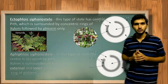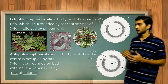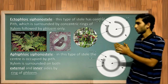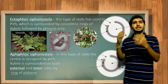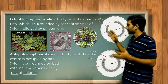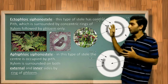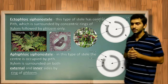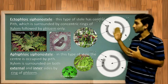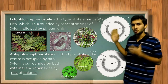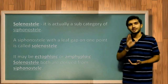In amphiphloic siphonostele, the central region is occupied by pith, and the xylem is covered on both the outer and inner sides by rings of phloem. Examples for amphiphloic siphonostele are the Marsilea rhizome and Adiantum, where we can find this type of stele.